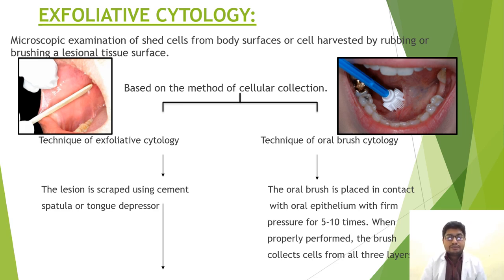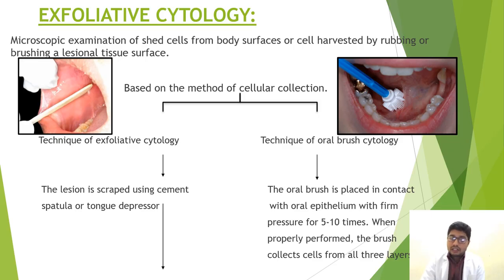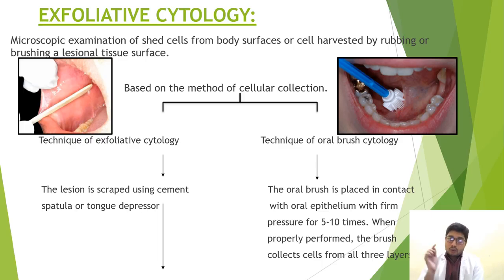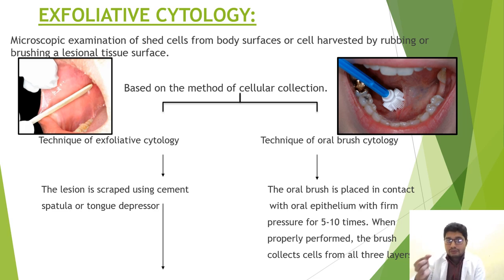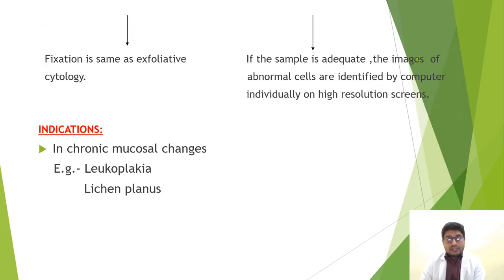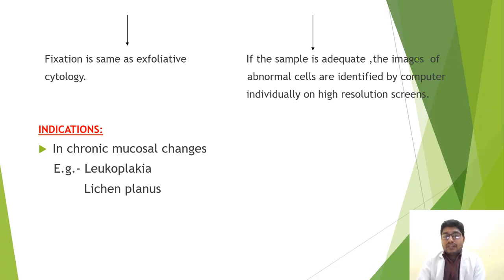The fourth technique is exfoliative cytology — microscopic examination of shed cells from a body surface, or cells harvested by rubbing or brushing a lesion's tissue surface. Based on the method of cellular collection, there is scraping and brush biopsy. In scraping, the lesion is scraped using a cement spatula. In brush biopsy, a special oral brush is placed over the lesion and scraped 5 to 10 times to collect shed cells from all three layers. Fixation is required for scraping, whereas in oral brush biopsy the results can be viewed on a computer screen. Lesions like leukoplakia and lichen planus can be evaluated using either exfoliative cytology technique.